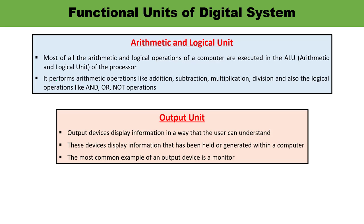Next and last is the output unit. As input unit is required, similarly output unit must also be required in the case of a computer. It consists of output devices which are attached to the computer. The output unit converts the binary data coming from the CPU into analog form which is understandable by humans. Common examples of output devices are monitor, printer, and plotter — these are attached to the computer and whatever the computer has processed can be observed by humans in a representative form.